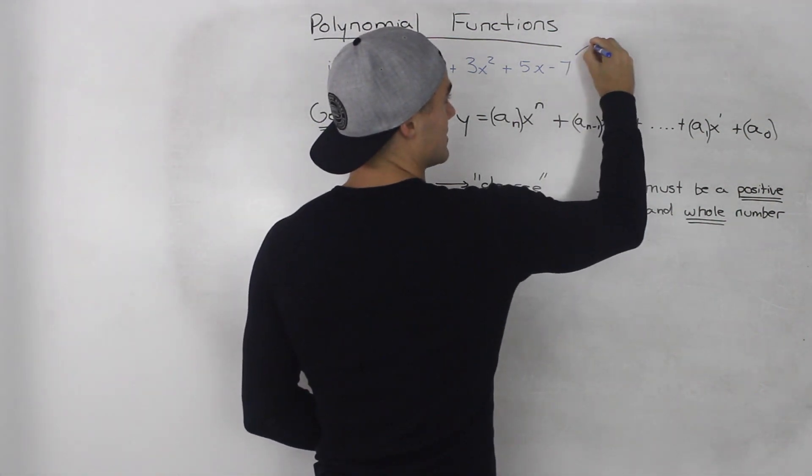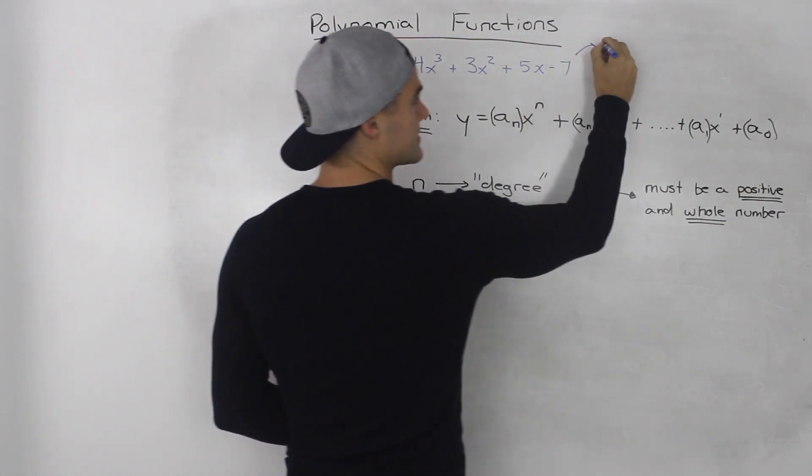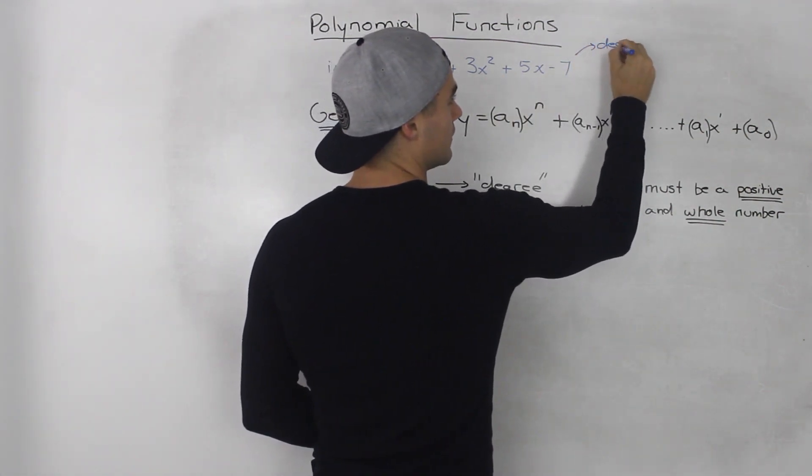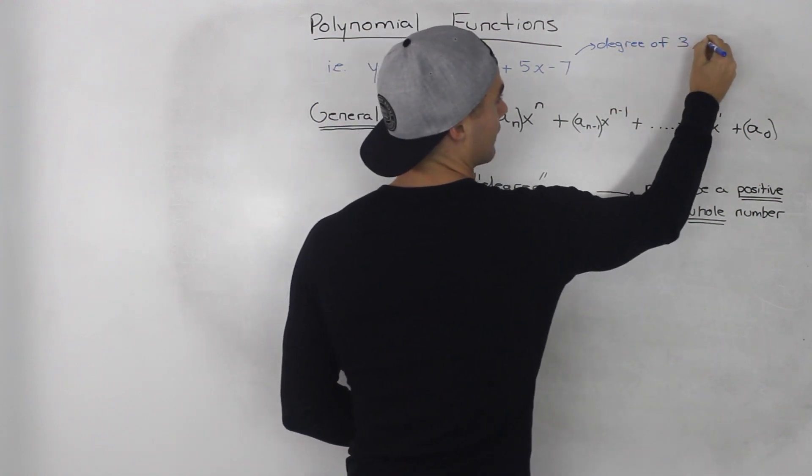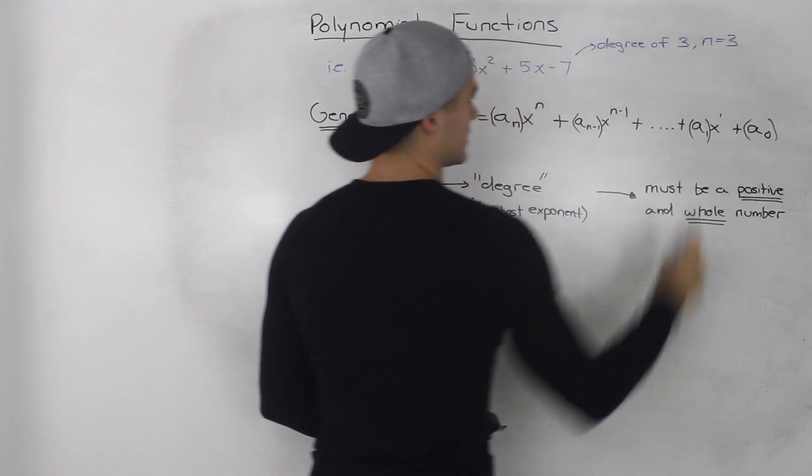So we would say that this polynomial function has a degree of 3, or the n value is equal to 3, the highest exponent.